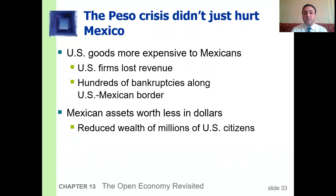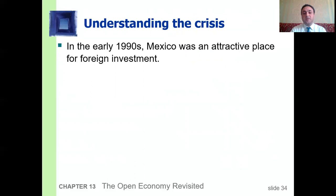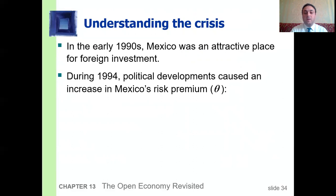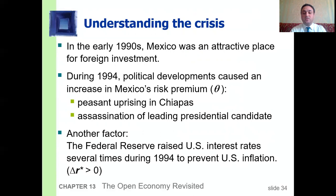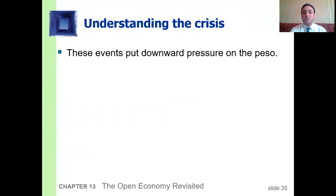To understand the crisis: in the early 1990s Mexico was an attractive place for foreign investment. During 1994, political developments caused an increase in Mexico's risk premium — a peasant uprising and the assassination of a leading presidential candidate. Also, the Federal Reserve raised U.S. interest rates several times during 1994 to prevent U.S. inflation, so the world interest rate increased. These events put downward pressure on the peso.